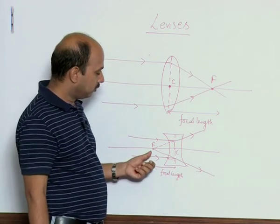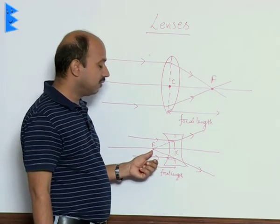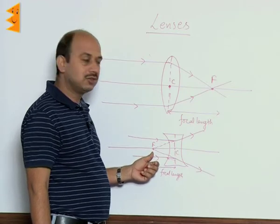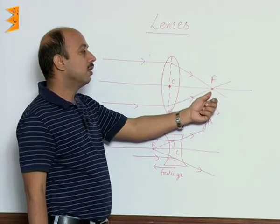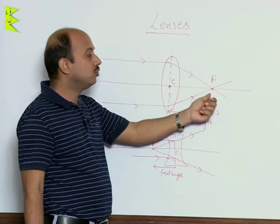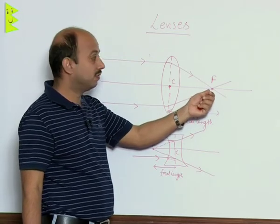There is a principal focus. The rays appear to diverge from this point after refraction. Here the rays meet after refraction - actual intersection of refracted rays.